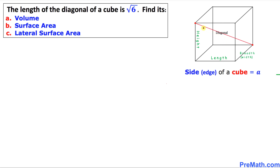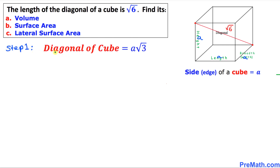Let's look at the diagonal. The diagonal is this red straight line, and that is square root of 6. One more thing to keep in mind: all sides of a cube are equal, and each side is 'a'. That means this height is 'a', this length is 'a', and this width is 'a' as well.